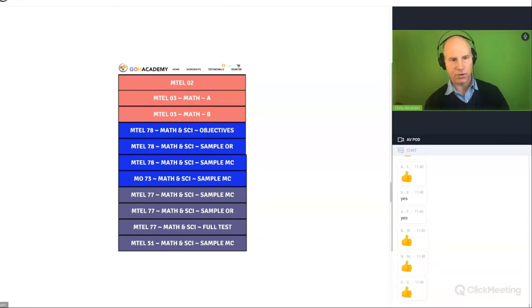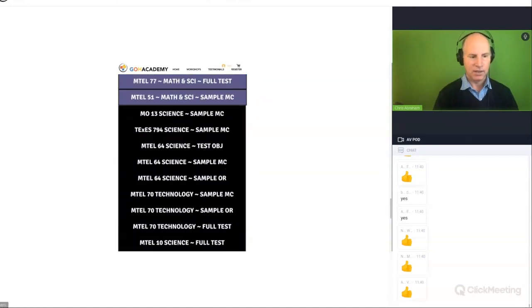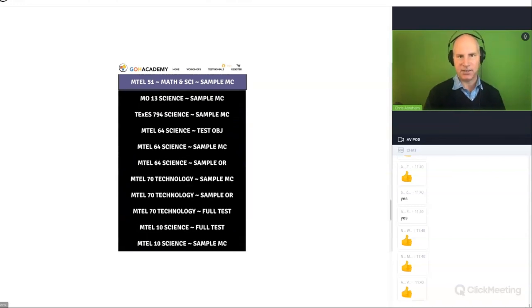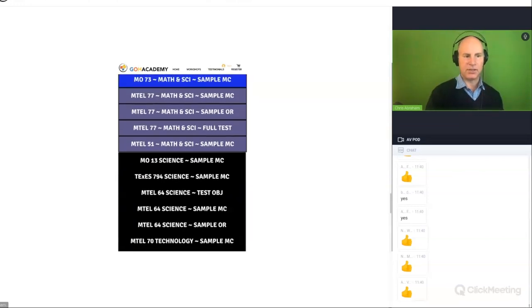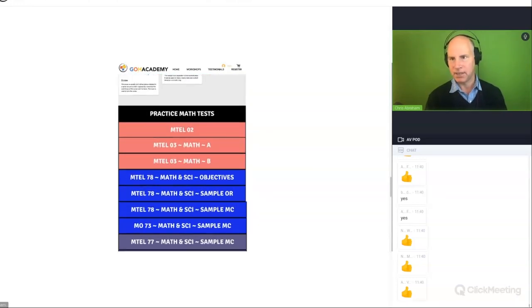On these ones right here, the 78, these are math and science stuff. 77 is harder math and science. And then we go further, and then we go down even more, and we get to a harder science that's more for teachers taking like the 64. Okay, these are all links that open up to math and science exams and problems. Thumbs up.